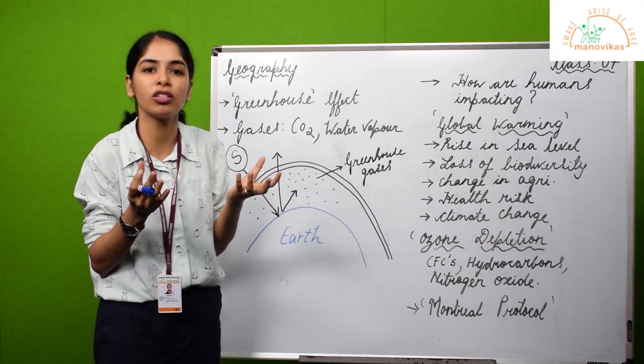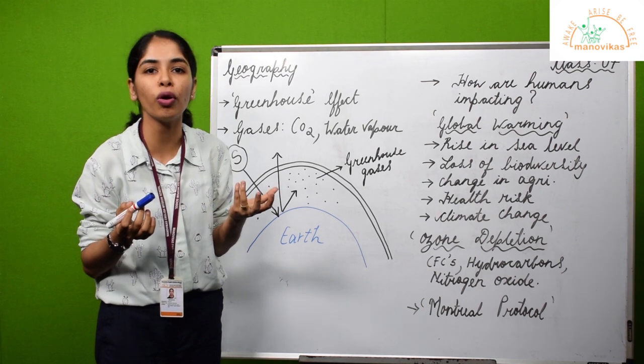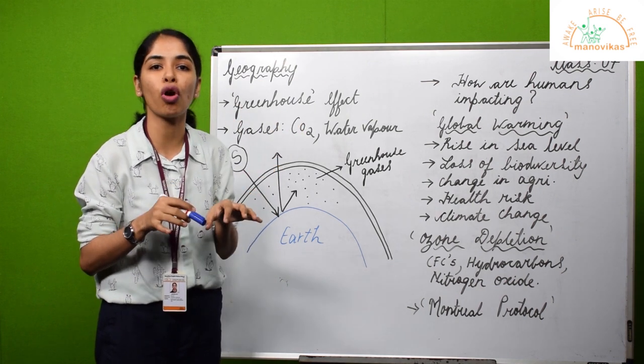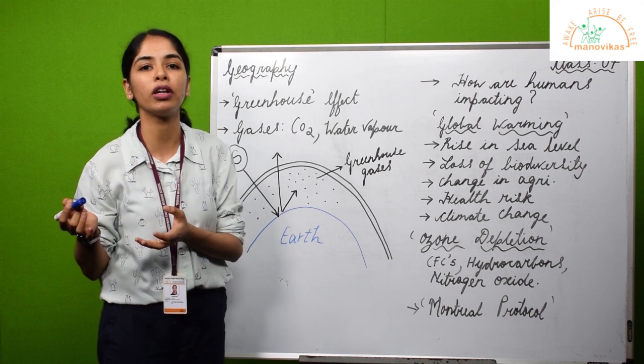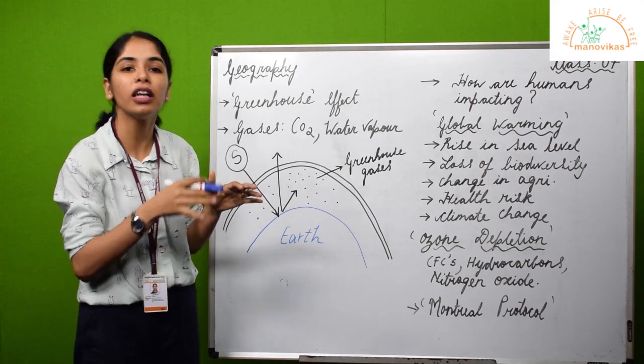What is a greenhouse or glass house used for? It's used mostly in the colder regions to grow crops which actually grow in the warmer or tropical climatic conditions.